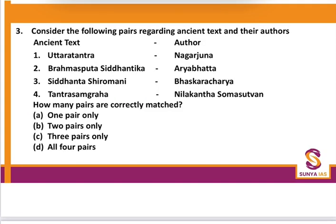Question number 3: Consider the following pairs regarding ancient texts and their authors. Uttar Tantra written by Nagarjuna — absolutely correct. Brahma Sputa Siddhantika written by Brahma Gupta — correct, not Aryabhad. Siddhant Shiromani by Bhaskaracharya — correct. Tantra Sangre by Neelkand Som Suttwan — correct. So three pairs are correctly matched.